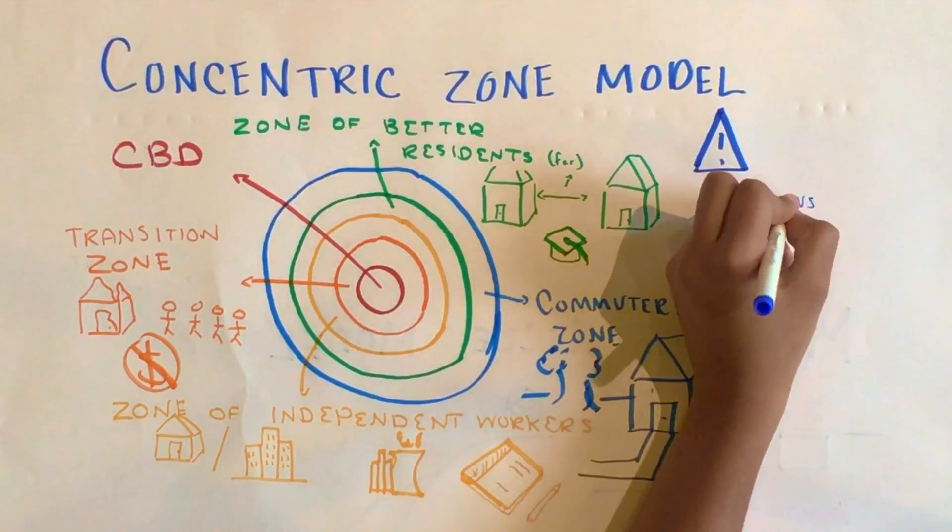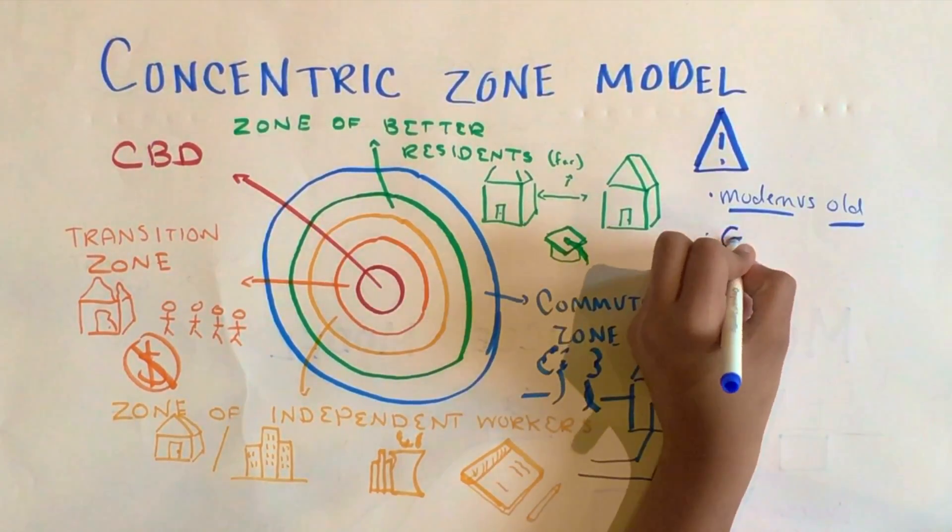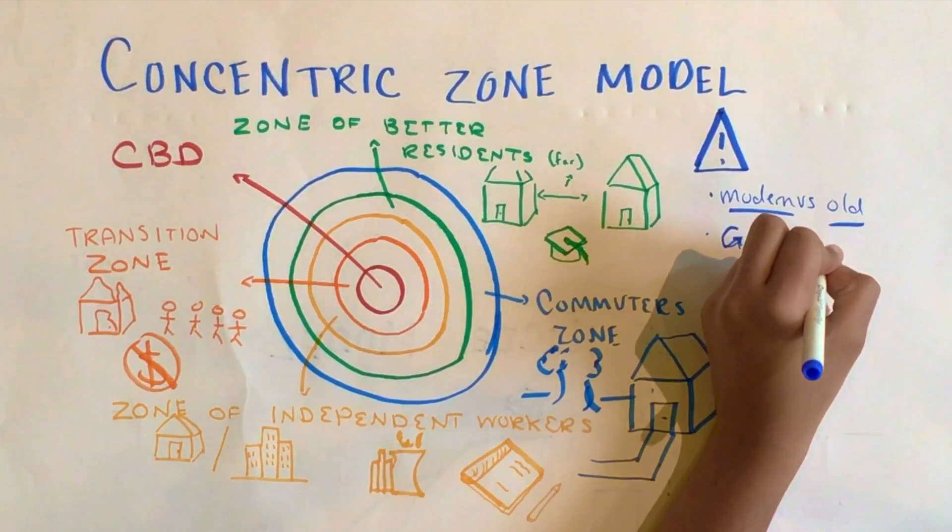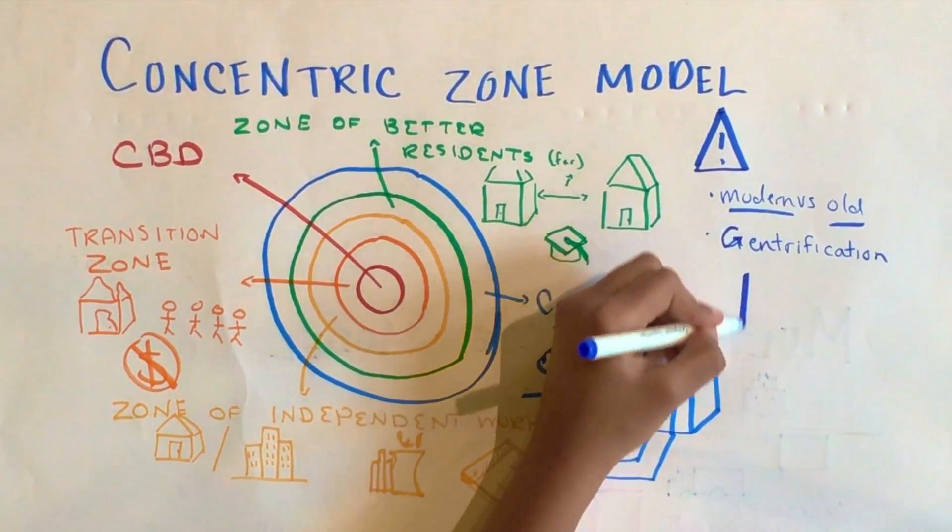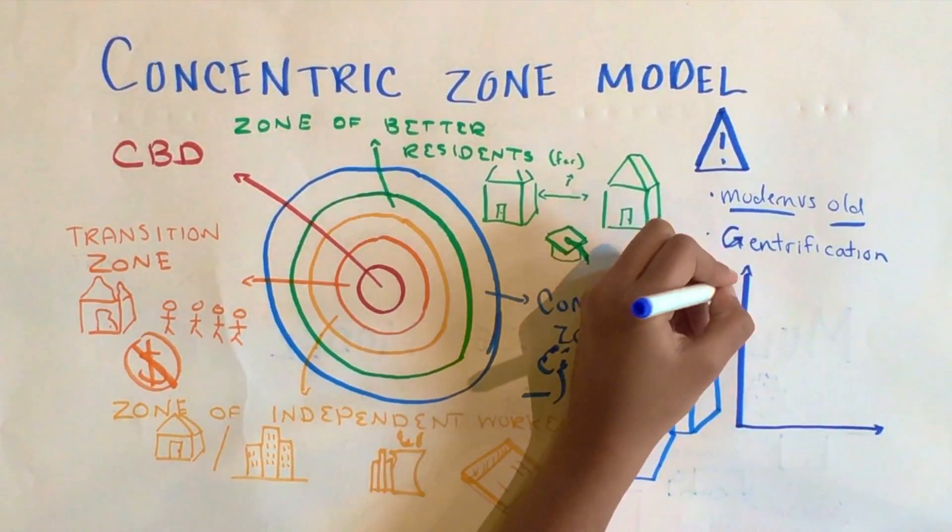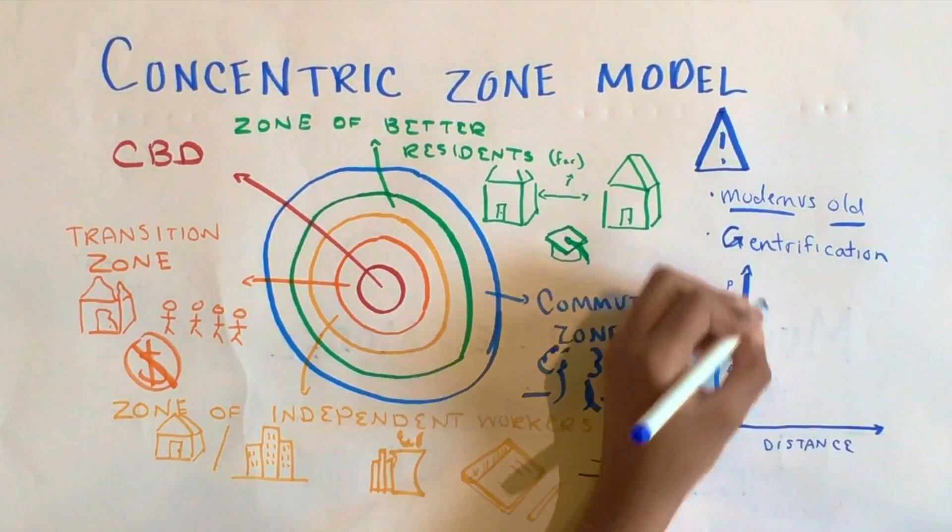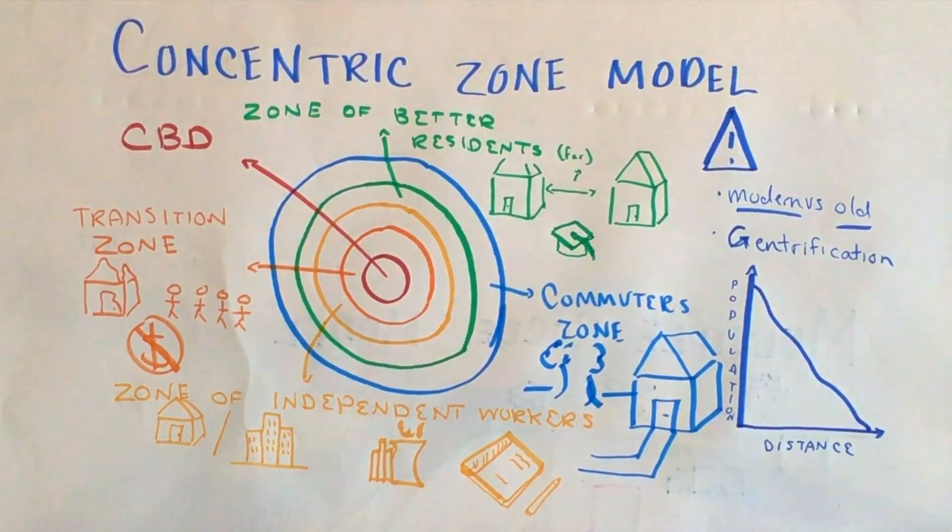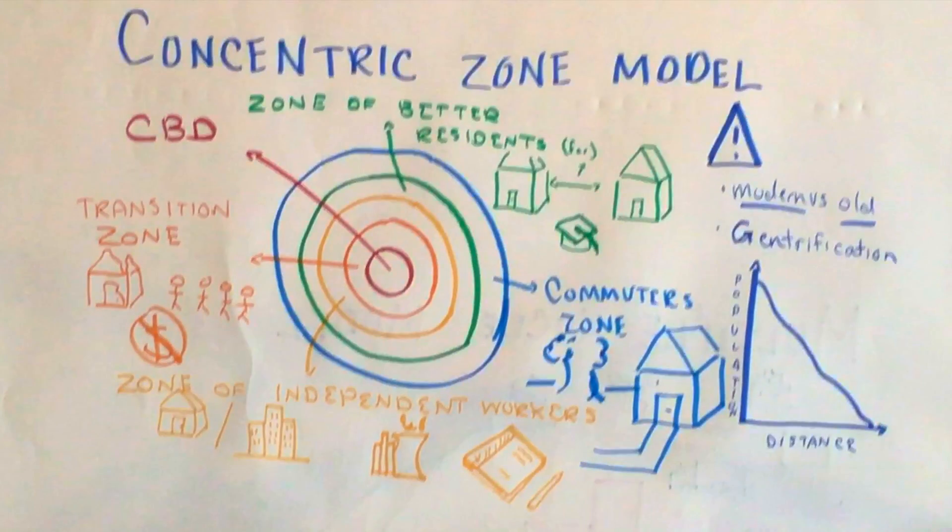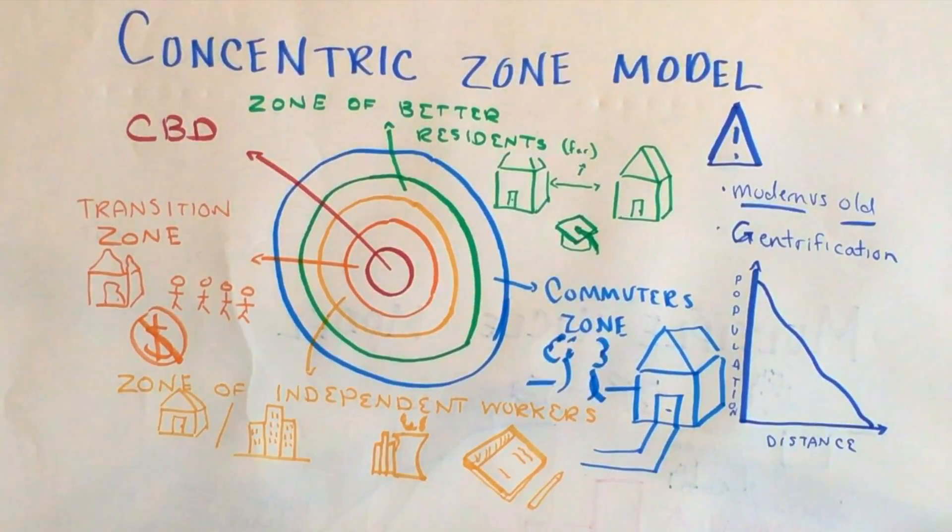Problems become evident when we apply this model to modern cities. This model also does not account for the variations in landscapes and shifting CBDs in cities, as well as gentrification. A rule of thumb to remember about the concentric circle model is that the further away you get from the CBD, the smaller the population, even though the area is closer to the CBD.